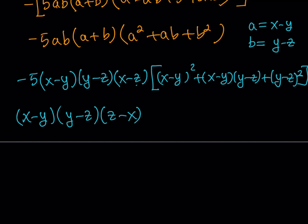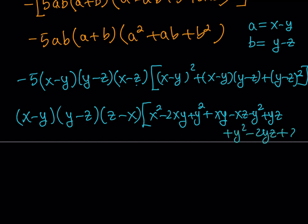Then, if I distribute this, I'll get xy minus xz minus y squared plus yz, and then plus y squared minus 2yz plus z squared. So that should be the whole thing.